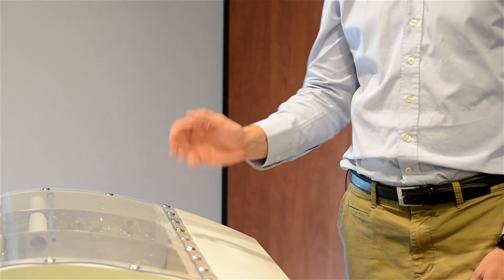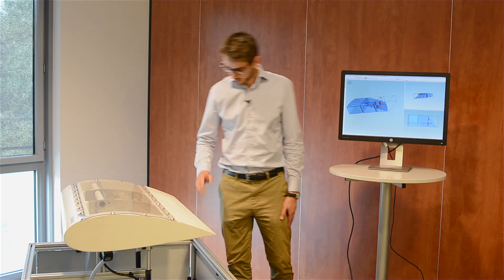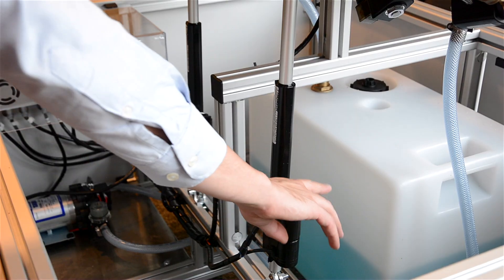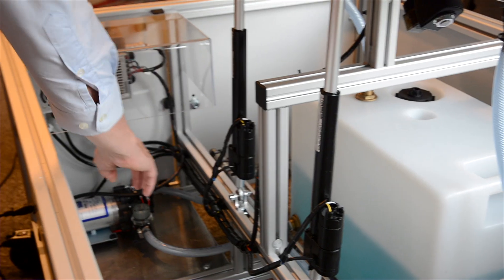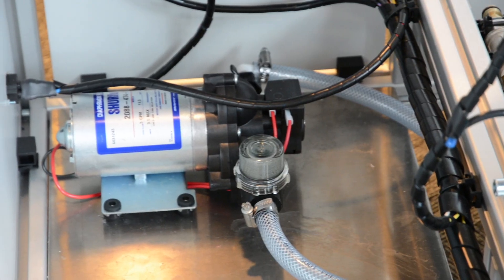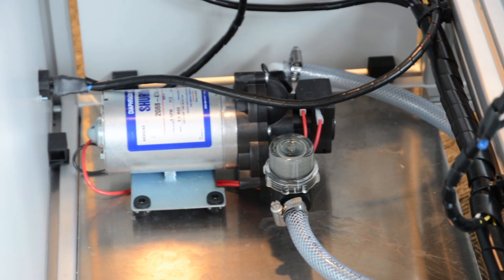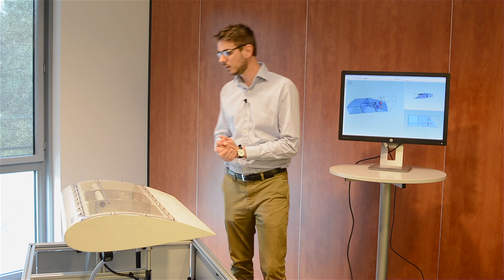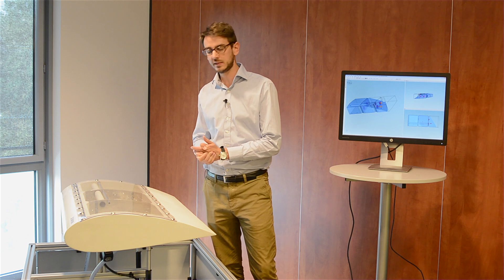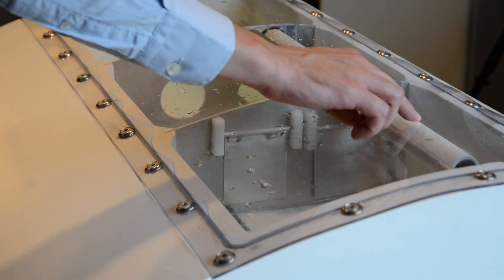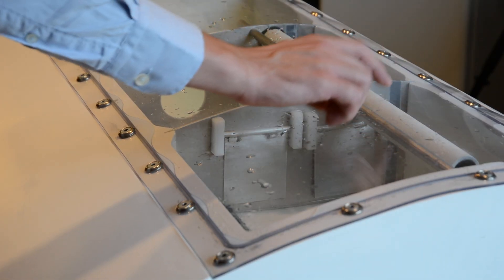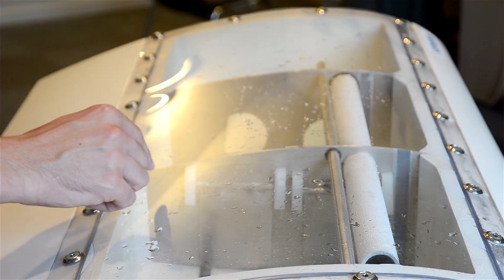The wing is composed of three compartments separated by ribs, as you would find on a real aircraft. Below, we have a refuel tank which is filled with water representing the fuel. The pump here allows to fill the wing with the water. To make it fully representative of a real fuel system, we have added flap valves, a balance pipe, a vent pipe, drain holes and vent holes.